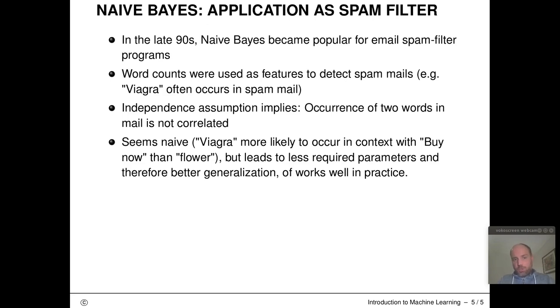One thing one should mention is that specifically in the late 90s, Naive Bayes became a super popular technique for email spam filter programs. In these programs, word counts were often used as features to characterize spam from non-spam emails. Maybe the term Viagra occurred very often in certain emails. Then the probability was highly increased that this was actually a spammy type of advertisement email.